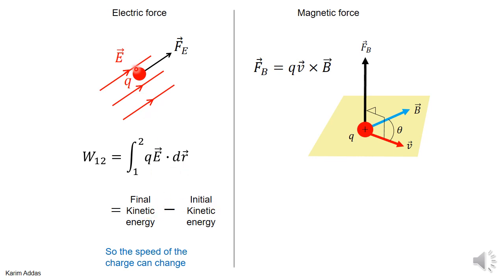It's very clear: if you put a positive charge at rest, a force will be applied to it, and it'll start to gain speed, going faster and faster. So you can change the speed of a charged particle in an electric field.